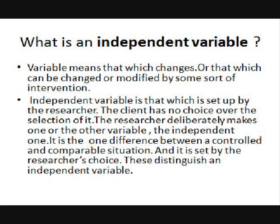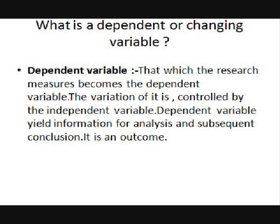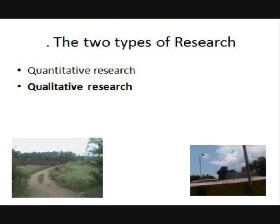The dependent variable is that which the research measures. That which is determined by the researcher is the independent variable, but what your research measures is the dependent variable. The variation of the dependent variable is controlled by the independent variable. Whatever variation you get in your dependent variable is actually controlled by the independent variable the researcher chose. Dependent variables yield information for analysis and subsequent conclusion — they are the observation and outcome.